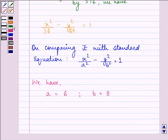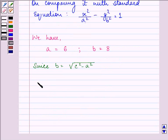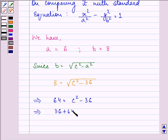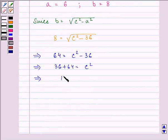Let us find the value of c using the relation b = √(c² - a²). That is, 8 = √(c² - 36). Squaring both sides, we have 64 = c² - 36, which implies 36 + 64 = c². That is, 100 = c², therefore c = 10.